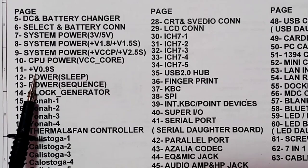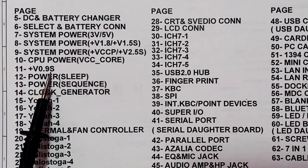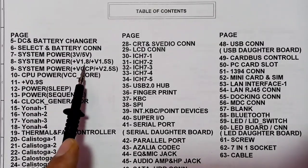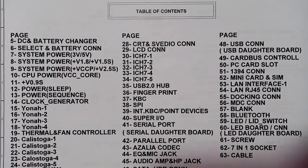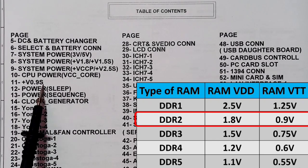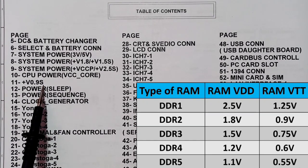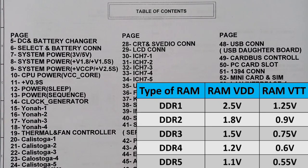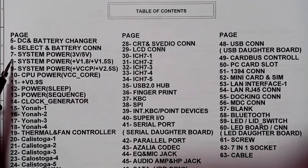The 0.9 volt is the RAM VTT, which is the power for the RAM terminals. It is basically half of 1.8 volt. The RAM has two voltages — the main voltage for DDR2 is 1.8 volt and the VTT is 0.9 volt. For DDR3, the main voltage would be 1.5 volt and the VTT would be 0.75 volt.